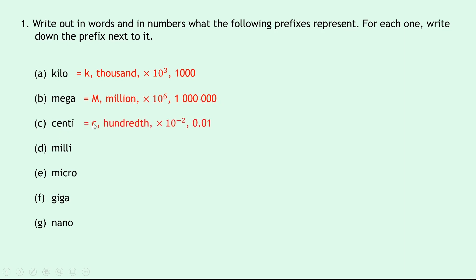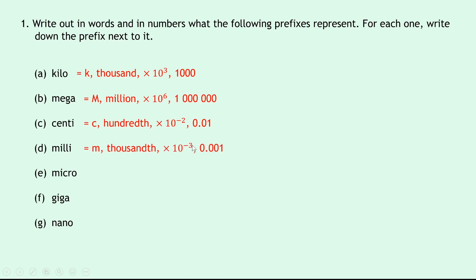Centi has the symbol small c, which is a hundredth or times ten to the minus two, and written in full it's 0.01. Part d is milli, which has the symbol small m, which is a thousandth or times ten to the minus three, and is the same as saying 0.001.